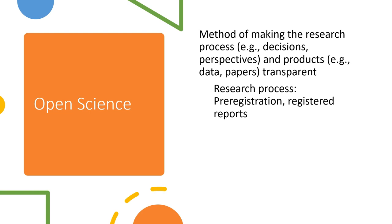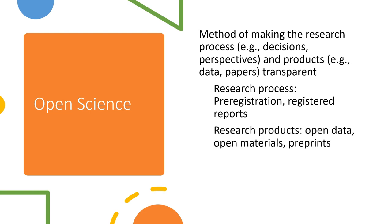Things like setting your alpha, when is it an outlier, what kinds of analyses are you going to run on which variables which are scored in which way. So we outline and try to really grapple with what we're doing and why we're doing it before we actually run the research study. We also try to make our research products transparent, and we can do this through sharing our data, sharing our materials, we might share our analysis scripts, but you can also share preprints and other means of science communication.